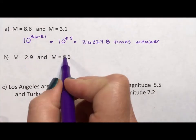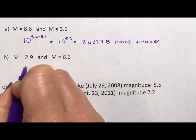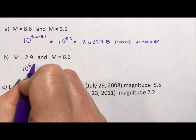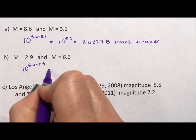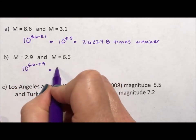So here, even though the smallest first and the biggest second, we still want the difference. So we say 6.6 minus 2.9, which will give us a 10 to the 3.7.